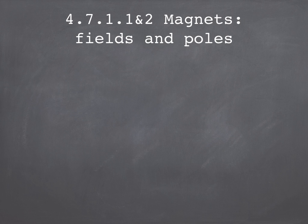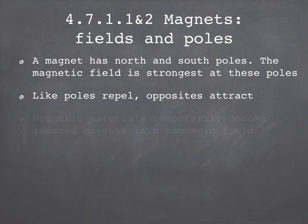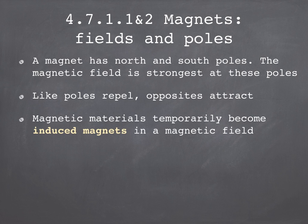So, to summarize. Magnets have north and south poles, and the magnetic field around the magnet is strongest close to the poles. If we bring two poles together, they will attract if they're opposite poles, or they will repel each other if they are like poles. If we place a magnetic material in a magnetic field, then it becomes an induced magnet, and it will only ever be attracted by other magnets.